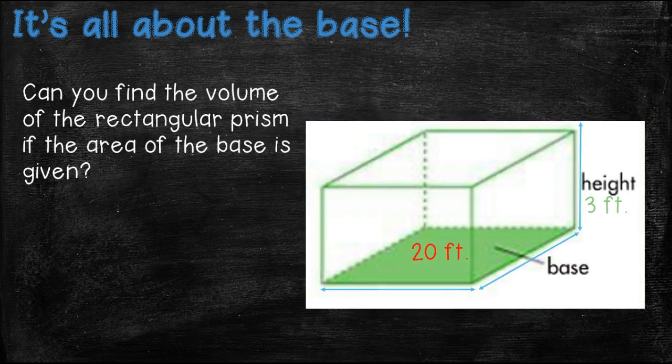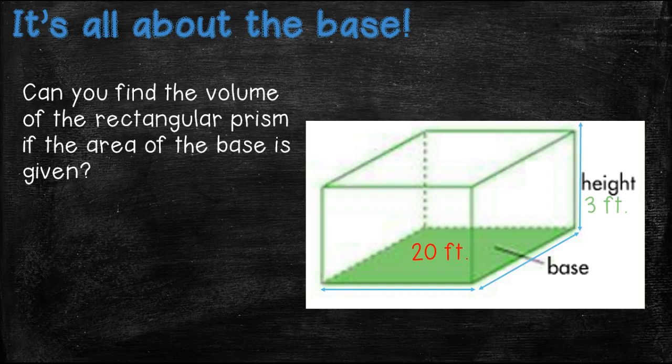All right, it's all about the base. Yes, it is. Can you find the volume of the rectangular prism if the area of the base is given? So here we have a rectangular prism and we know to find the volume, which is what it's asking us to do, we would normally do the length times the width times the height. But in this case, we only have the height and then we have the area of the base.